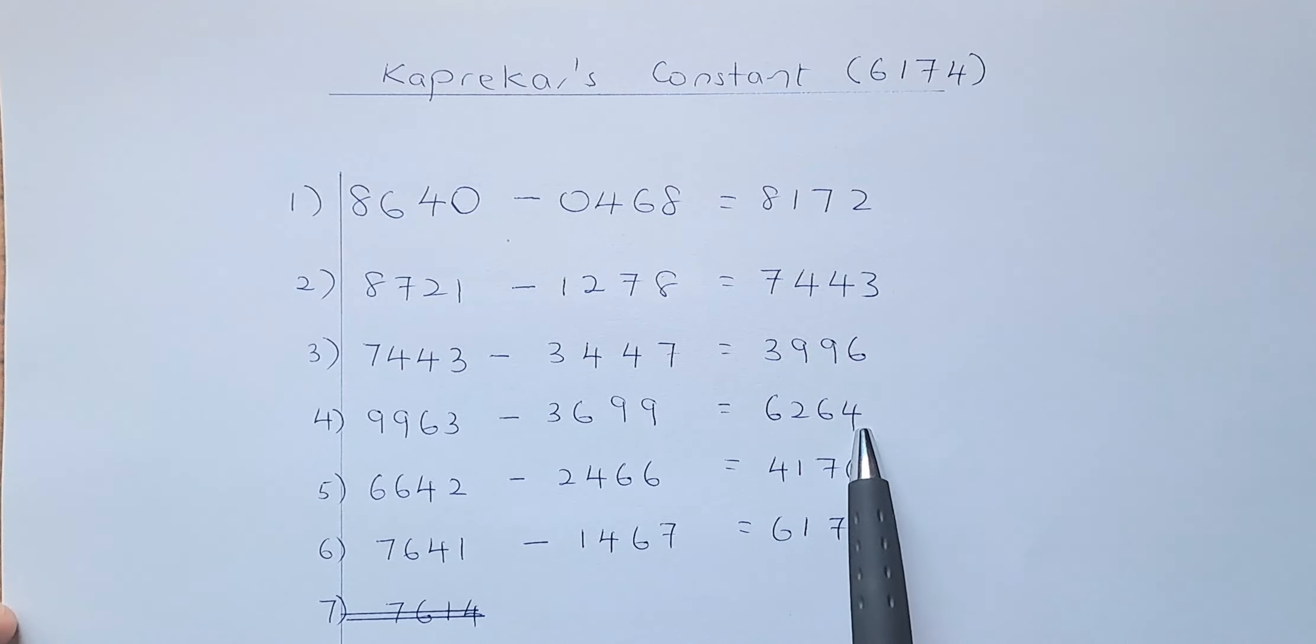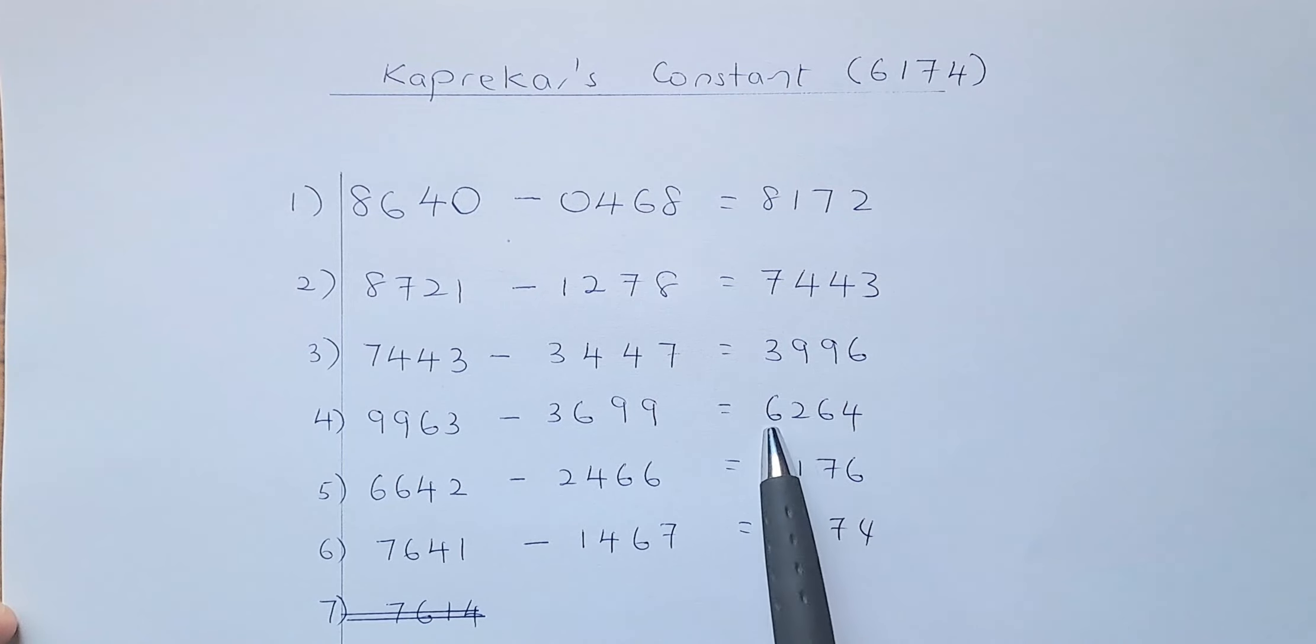What do you do now? The next step, you're going to do the same thing again. Make the biggest number, so 6642. And you're going to minus the reverse, 2466, smallest to biggest. And you're going to get 4176.